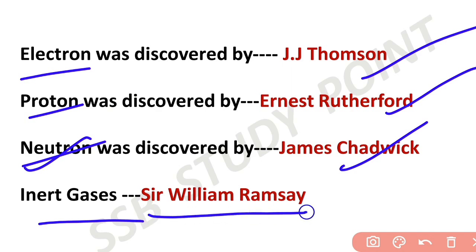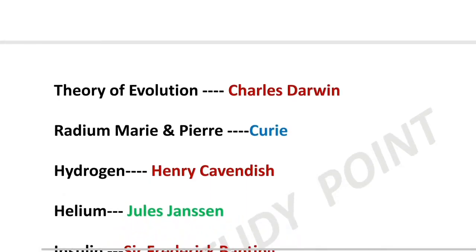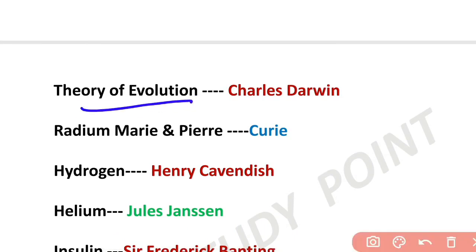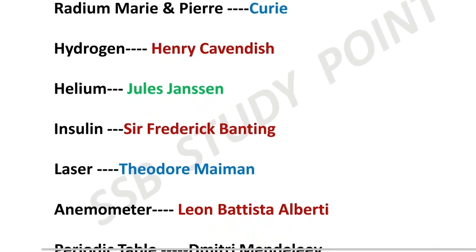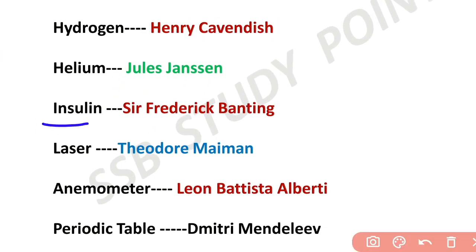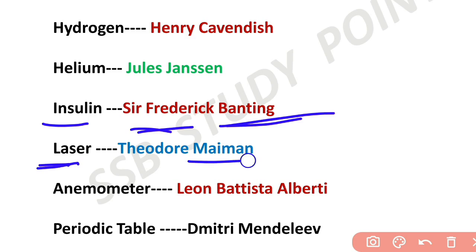Inert gases in the periodic table are very important — discovered by Sir William Ramsay. The Theory of Evolution was proposed by Charles Darwin. Radium was discovered by Marie Curie. Hydrogen was discovered by Henry Cavendish.